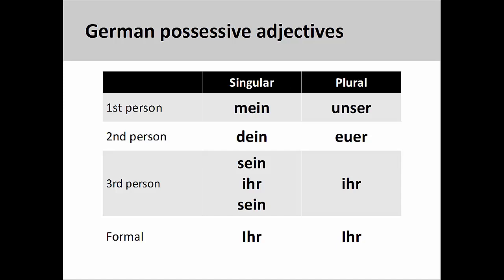Mein — first-person singular. Dein — second-person singular. Sein — masculine, third-person singular. Ihr — feminine, third-person singular. Sein — neuter, third-person singular. Unser — first-person plural. Euer — second-person plural. Ihr — third-person plural. The formal possessive adjective, both singular and plural, is Ihr with a capitalized first letter. You may have noticed that some of the possessive adjectives have 'ein' in their roots, which helps to explain why these adjectives are declined like indefinite articles. Even if an adjective does not have 'ein' in its root, such as 'ihr,' it still follows the same declension pattern.